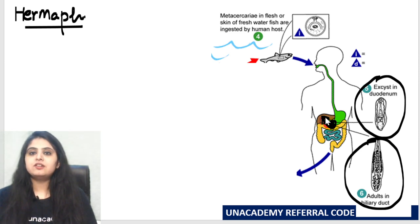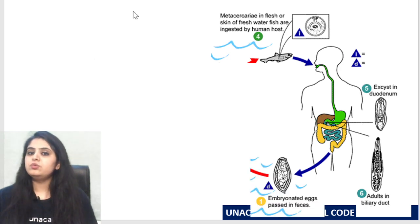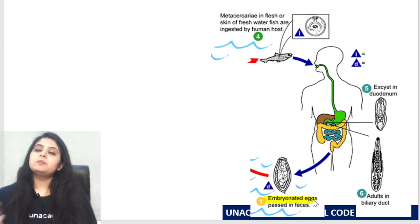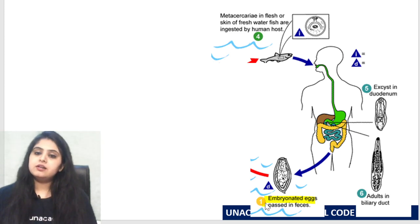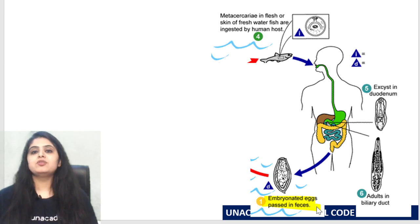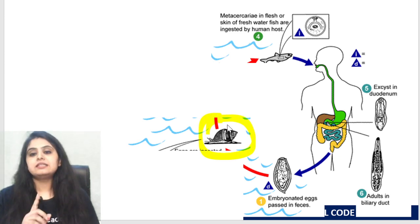These hermaphrodite adults are in the biliary tract and then the eggs are passed. Embryonated eggs are passed in the stool. Compare this with yesterday — in Paragonimus westermani, unembryonated eggs were passed and became embryonated after coming out. Here, directly embryonated eggs are passed in the faeces, and these are taken up by the first intermediate host, the snail.